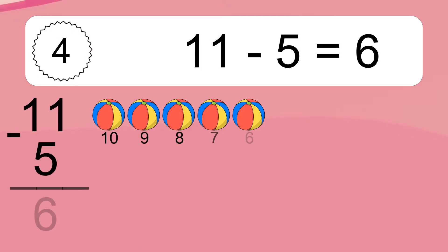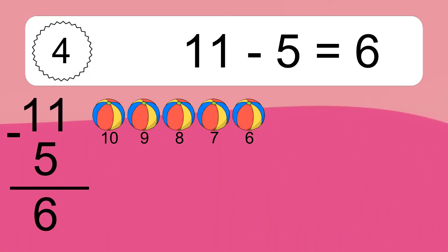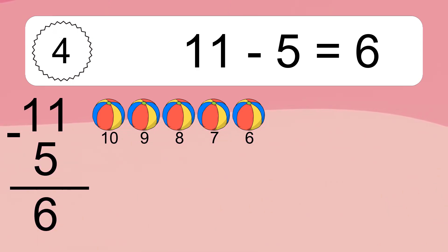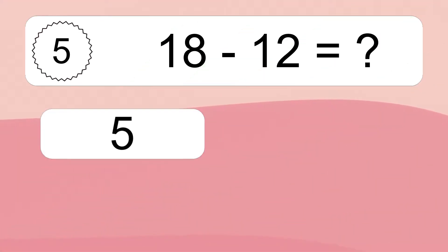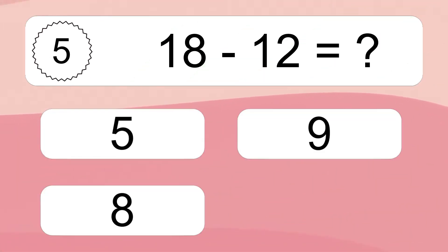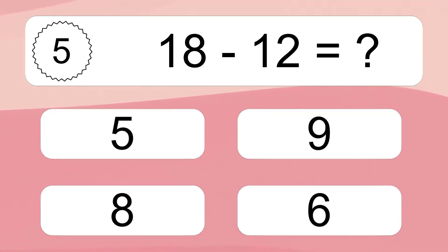11 minus 5 equals what? 11 minus 5 equals 6. Let's count it: 10, 9, 8, 7, 6.